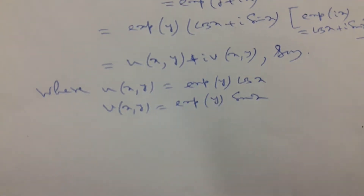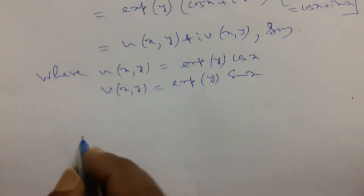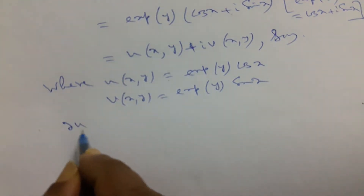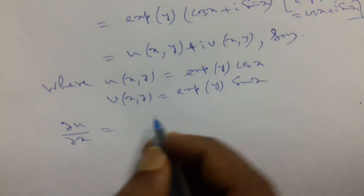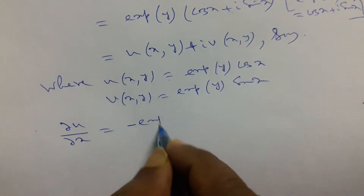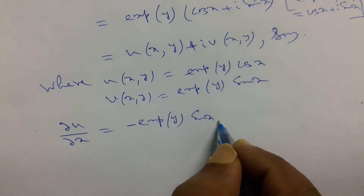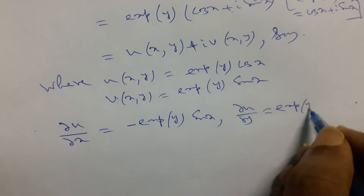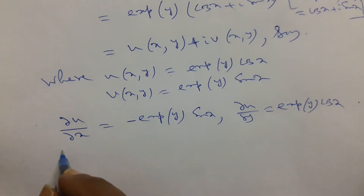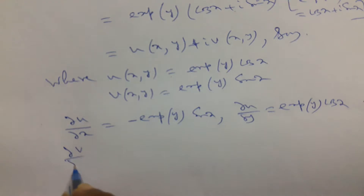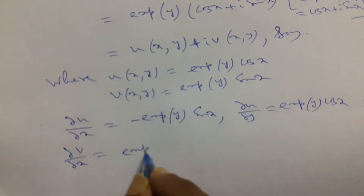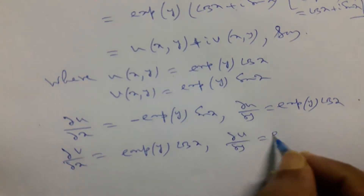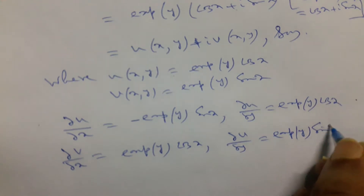Now, taking the partial derivatives for the Cauchy-Riemann equations: ∂u/∂x = −e^y sin x, ∂u/∂y = e^y cos x, ∂v/∂x = e^y cos x, and ∂v/∂y = e^y sin x.